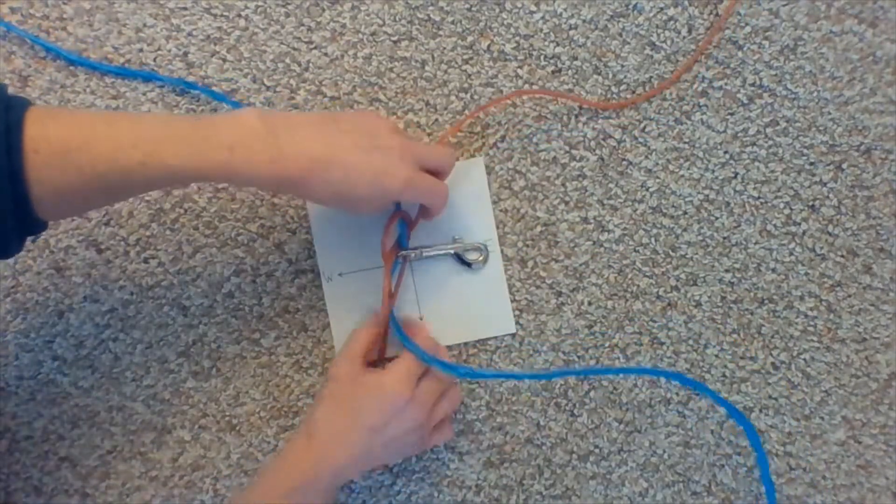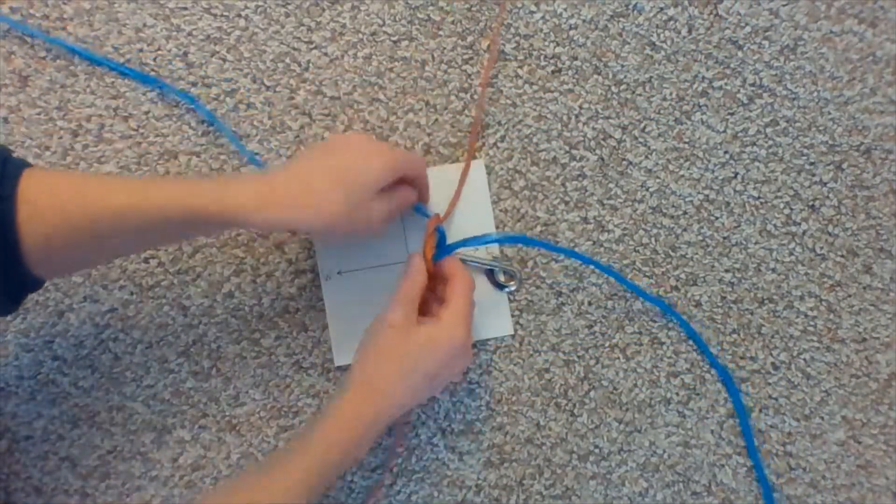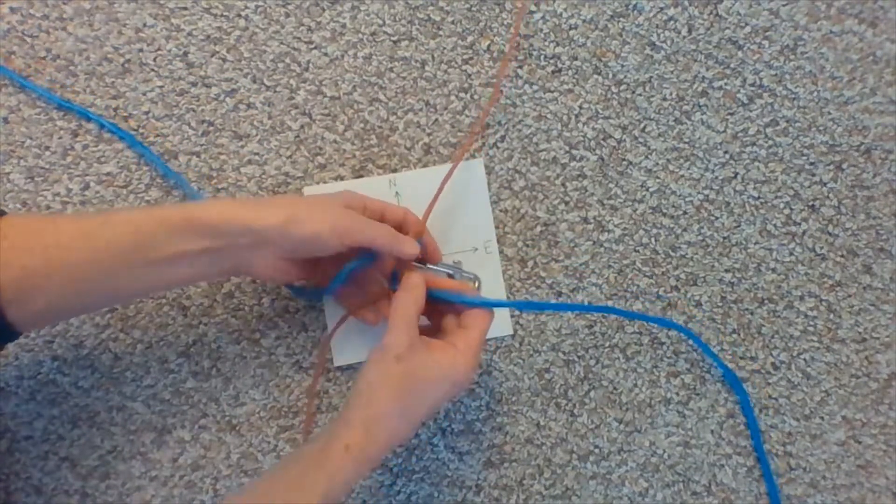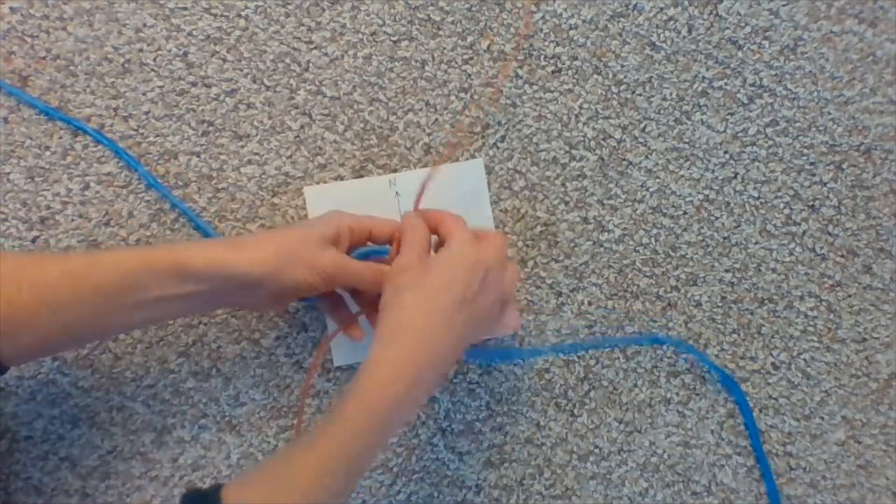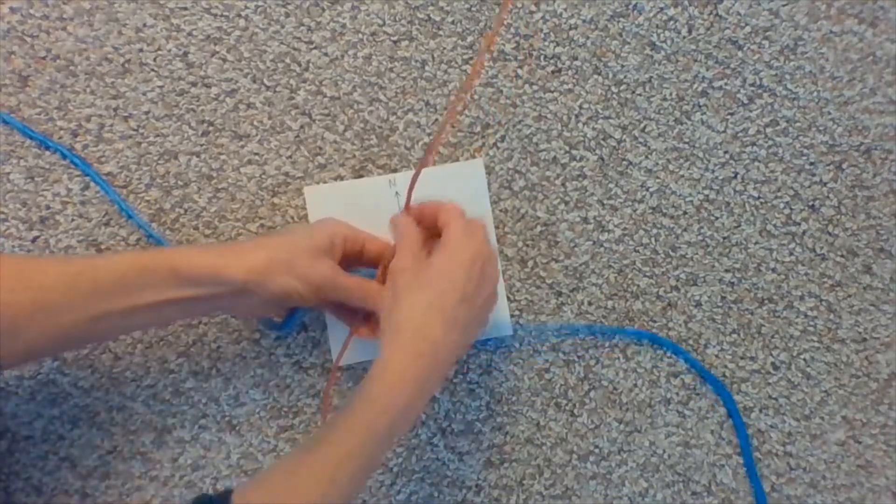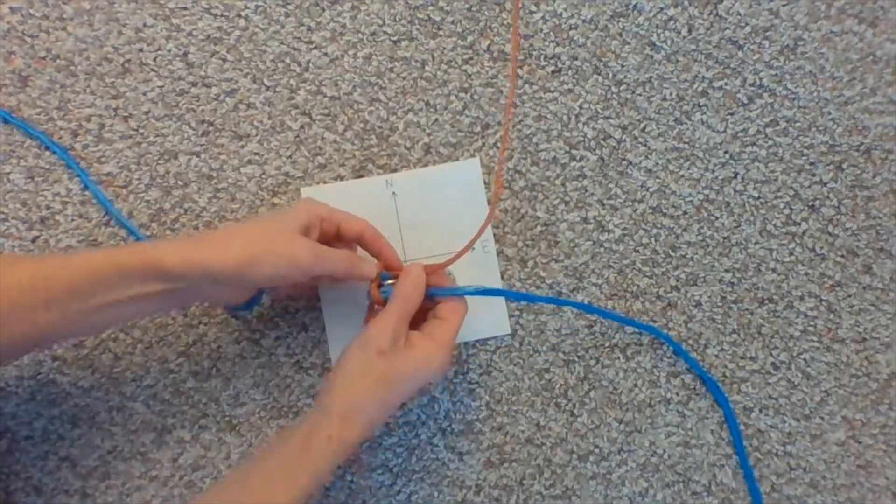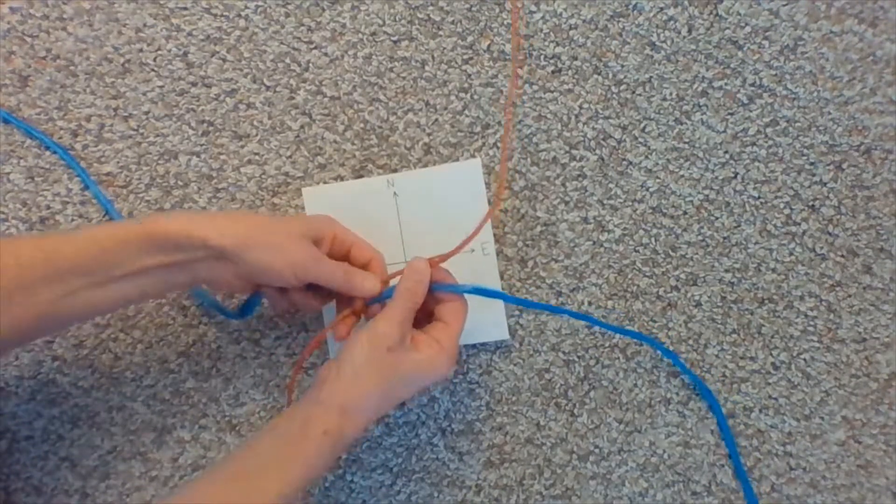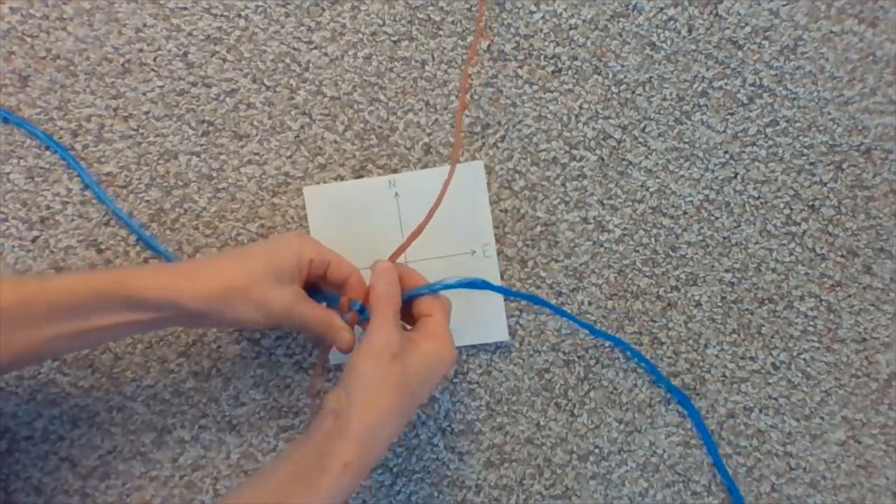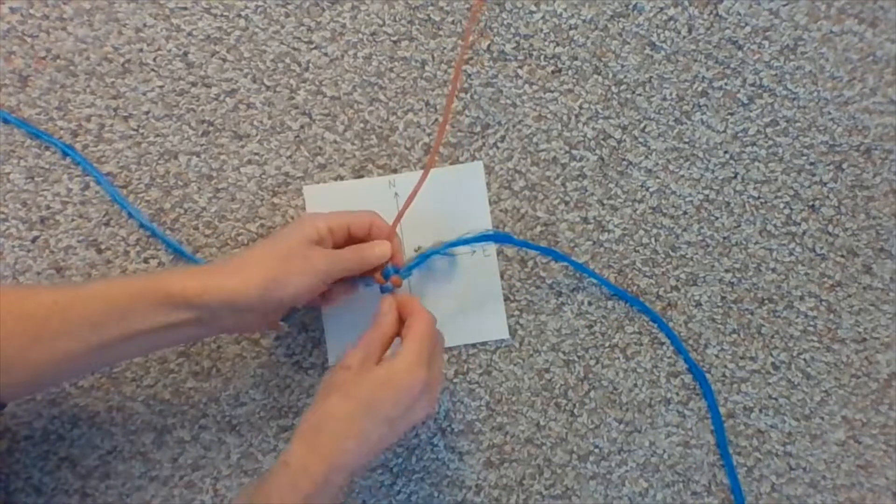And then, for this first piece, just try to keep everybody in alignment, and pull them tight. So, this will make a square. It's going to pretty much be a square kind of stitch.